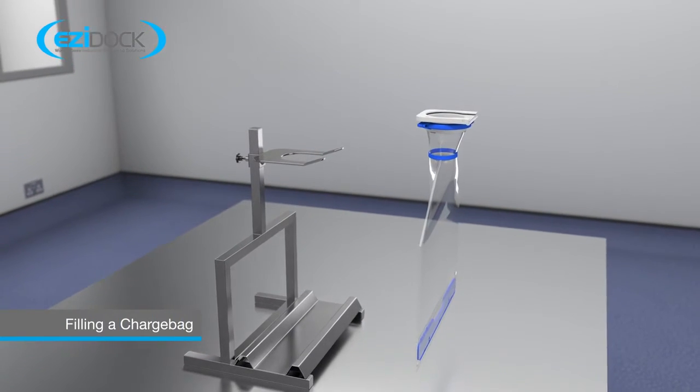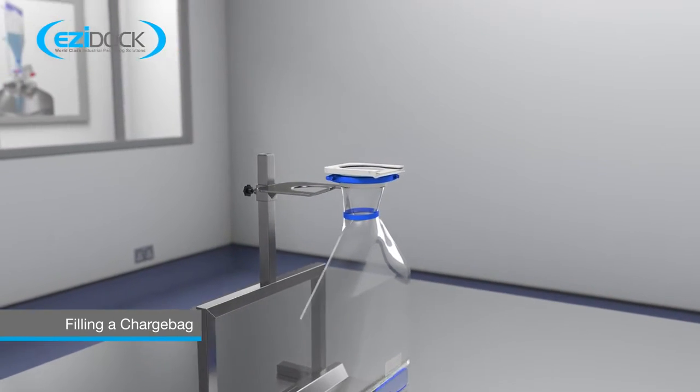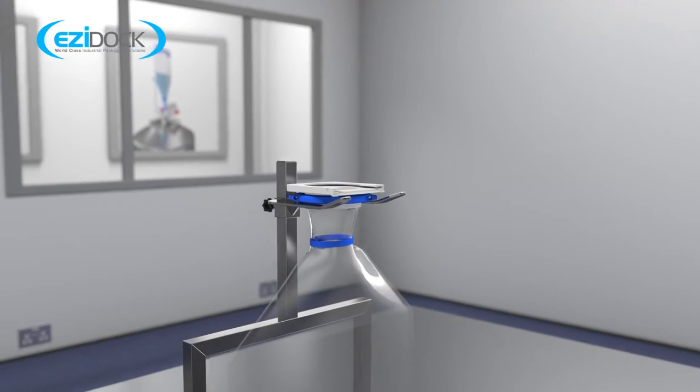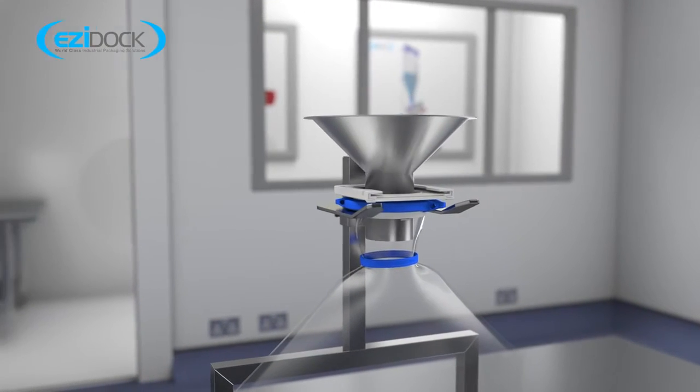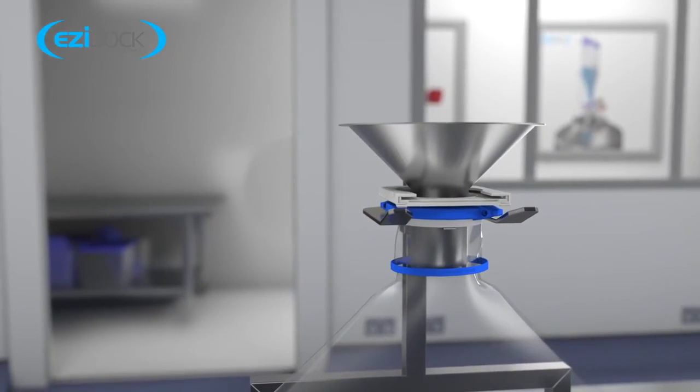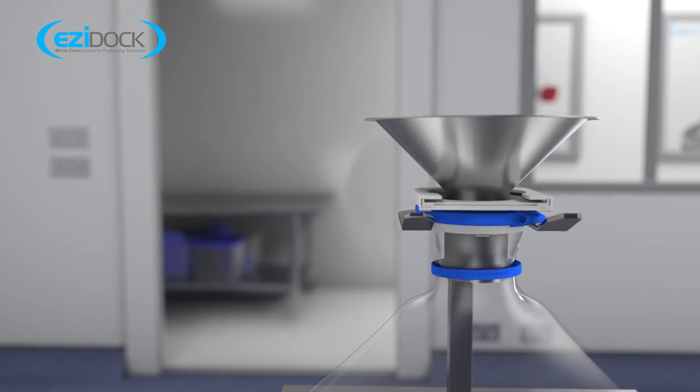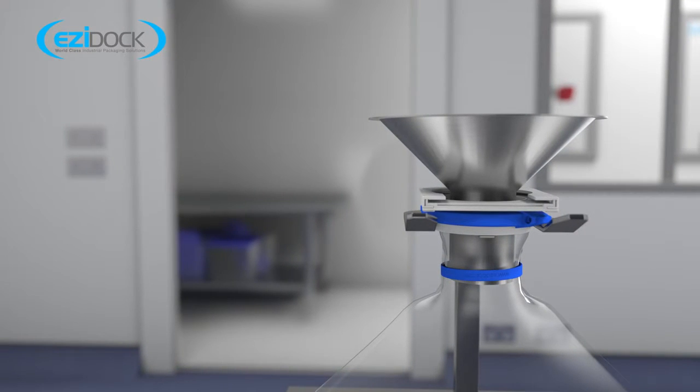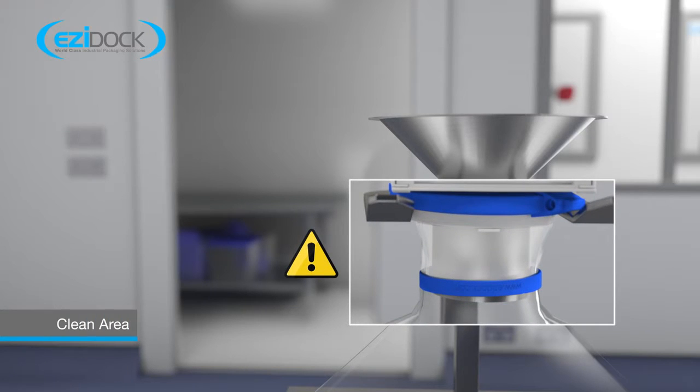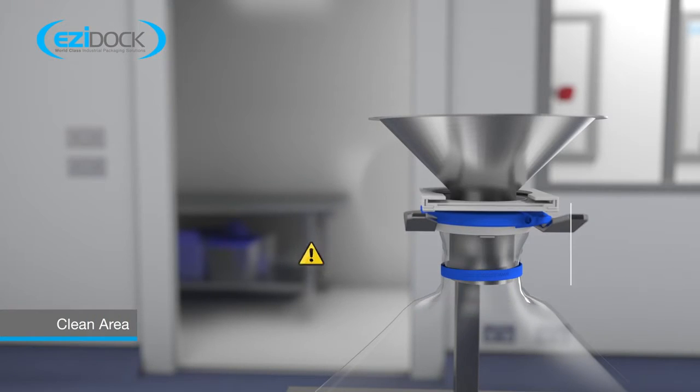Next, place the charge bag into the filling stand with the ID label facing forwards. Fully insert the filling funnel through the passive body. The blue silicon filling band must tightly wrap around the filling funnel and should be positioned towards the end of the funnel spout. This will create a clean area and prevent product from contaminating the charge bag neck and the passive during the filling process.